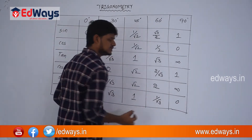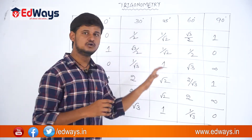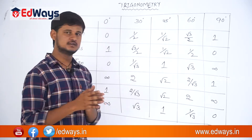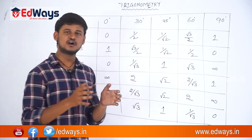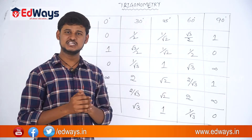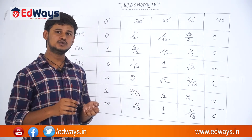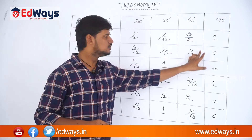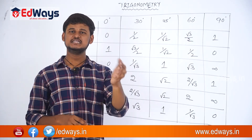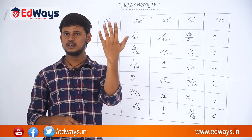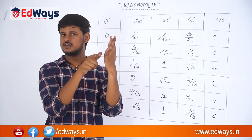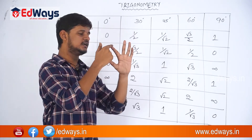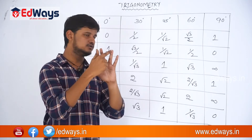Now, how do we remember these values without actually mugging them up? I will share one trick — just follow the trick and you can easily remember all these values. Remember these 5 values: 0, 1/2, 1/√2, √3/2, and 1. Take any hand and assign these 5 values to each of the 5 fingers.